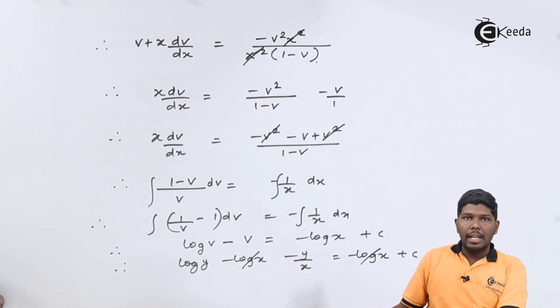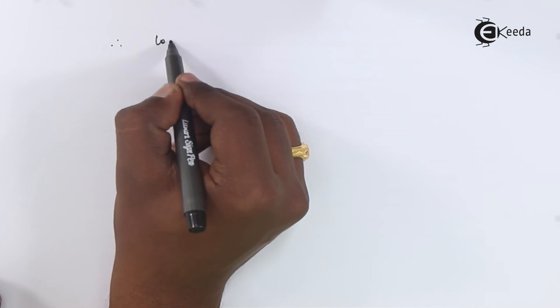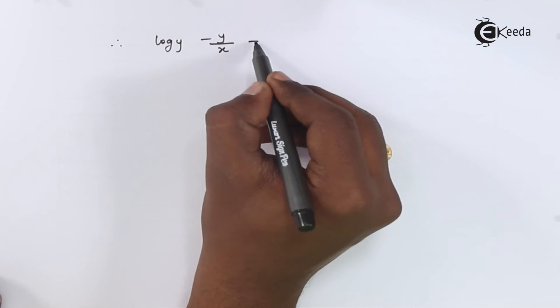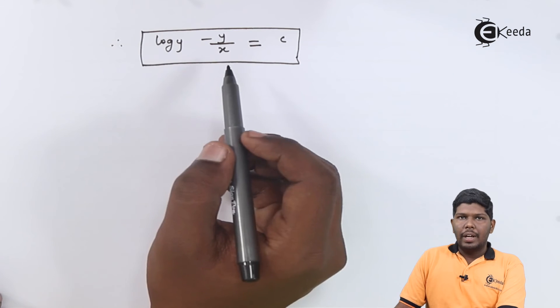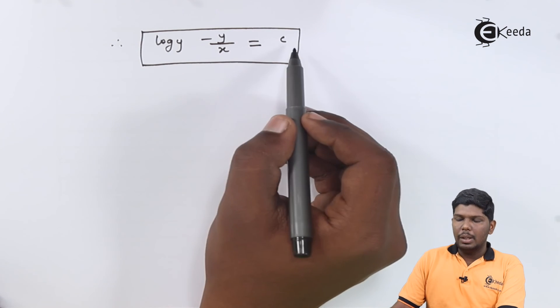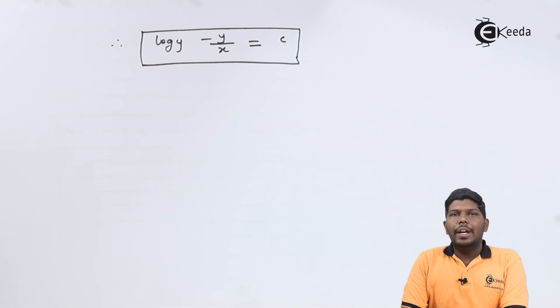And also minus log x will be cancelled. Therefore the final answer will be log y minus y by x is equal to c.